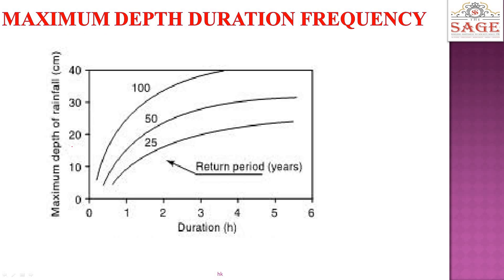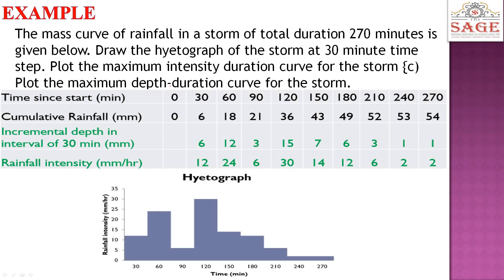Next curve: maximum depth-duration-frequency. Here the y-axis has depth, x-axis has duration, and different curves represent return periods. For a 100-year return period study, the maximum depth that can occur is around 35 cm.